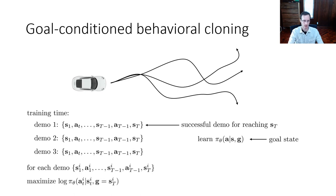So for each demo, you maximize the log probability of the action in the demo given the state and given the last state in the demo. That's basically the entirety of the method. And this is goal-conditioned behavior cloning. So you just feed in two states instead of one.